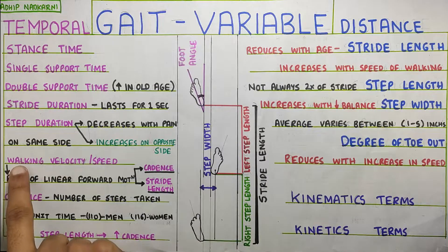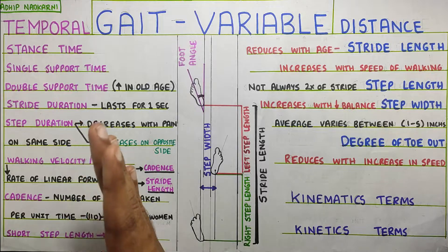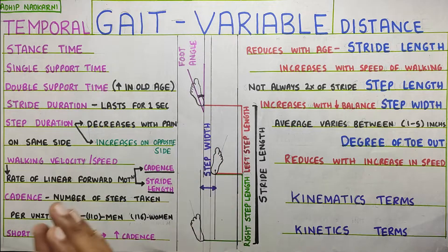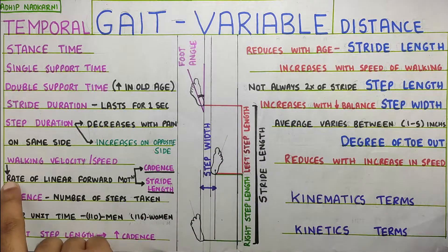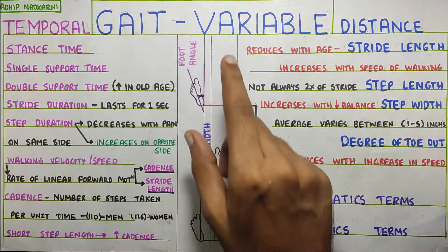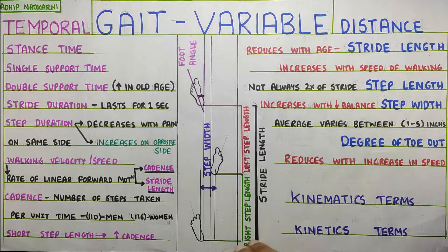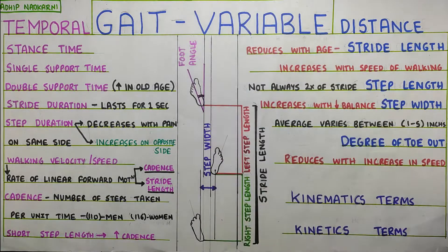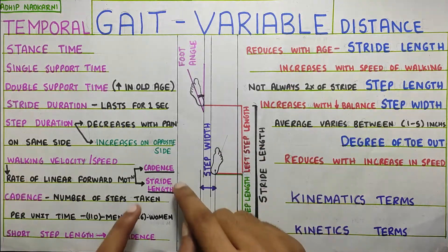Then, going to the next one, that is the walking speed or walking velocity. Now, velocity is with direction and speed is without direction. That's the difference but otherwise, they are pretty much the same. So, it is the rate of linear forward motion. How quickly you are going ahead and this speed is determined by your cadence and your stride length. So, how big strides you can take to cover the distance will determine your walking velocity or speed and cadence.